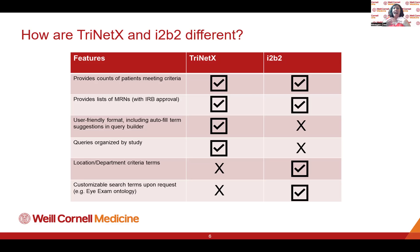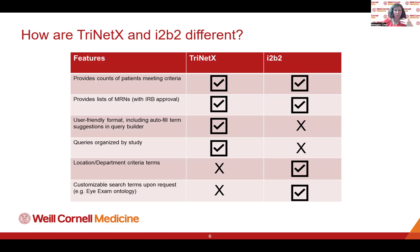For example, TrinetX can get you data based on anyone who has been a patient at Weill Cornell, but if you need specific location or department information for their encounters — like who went through the emergency room — you'll need I2B2. Also, TrinetX is not hosted through Weill Cornell; it's its own company and we send them the data. I2B2 is hosted internally, so we can customize the terms available and potentially create niche terms on request. Both are excellent cohort discovery tools.